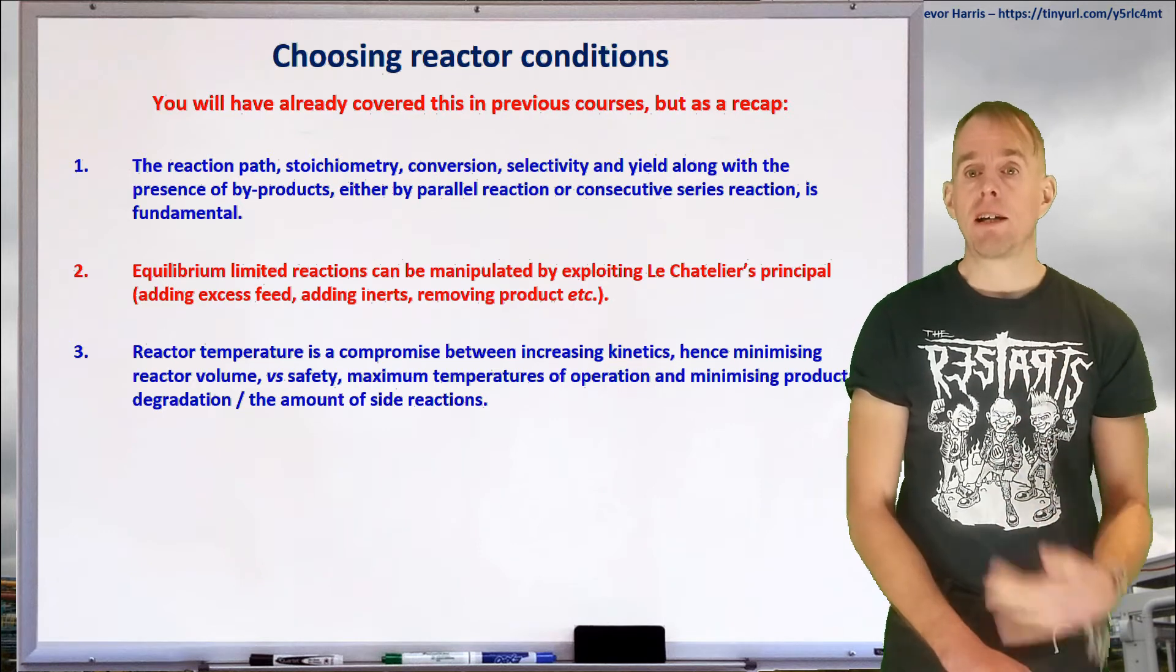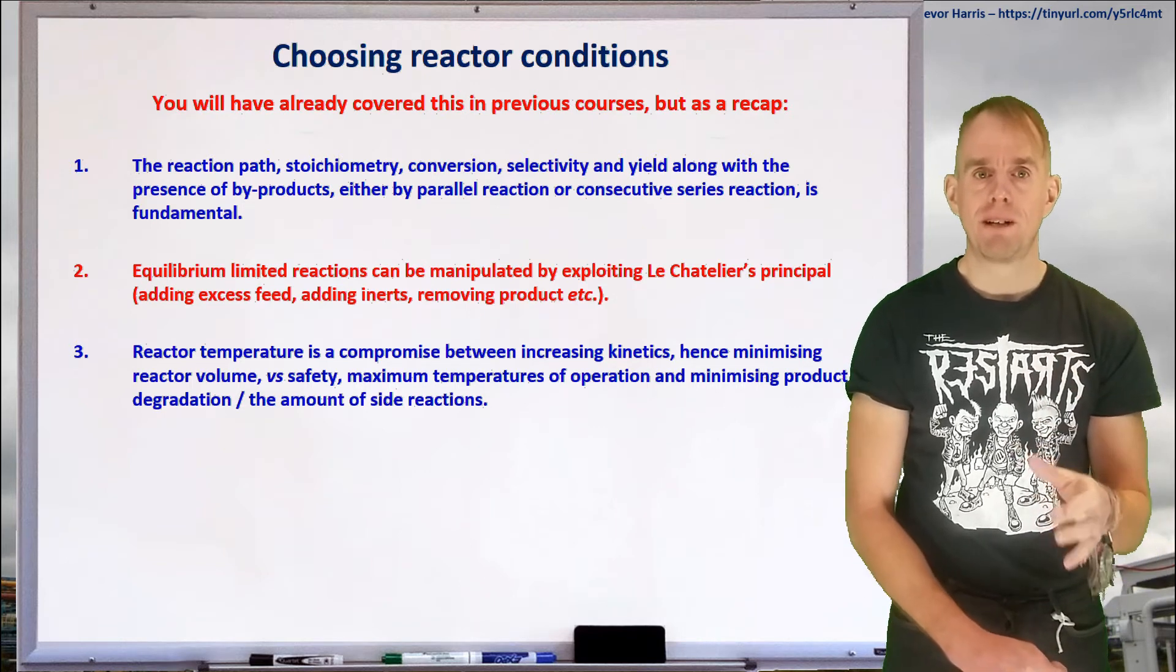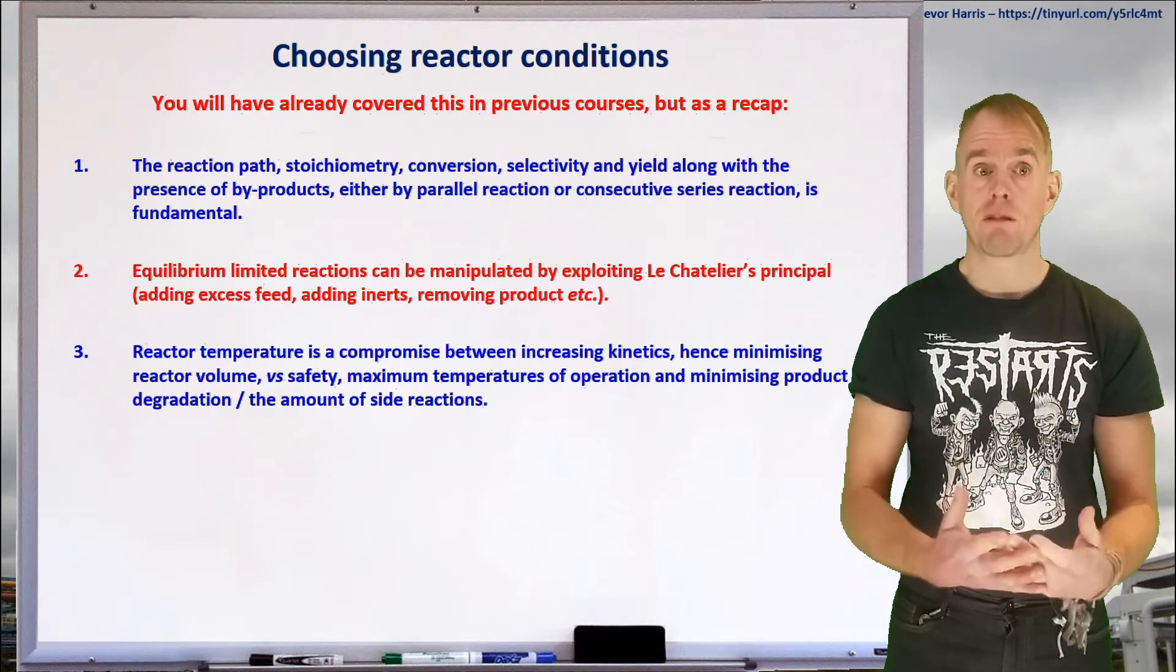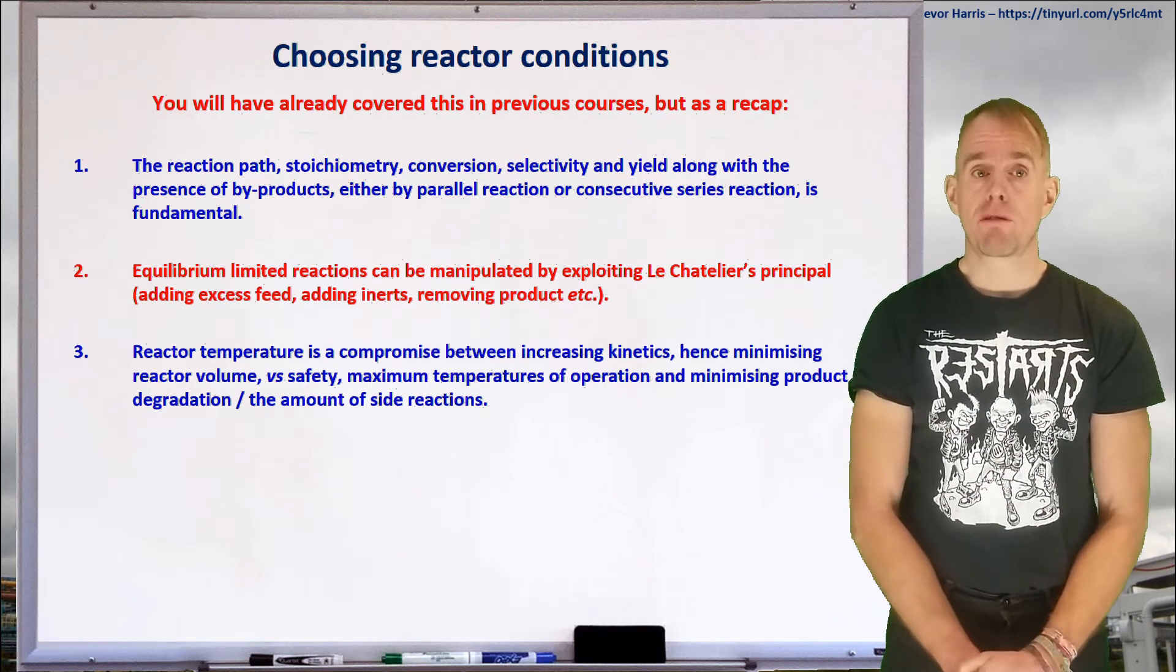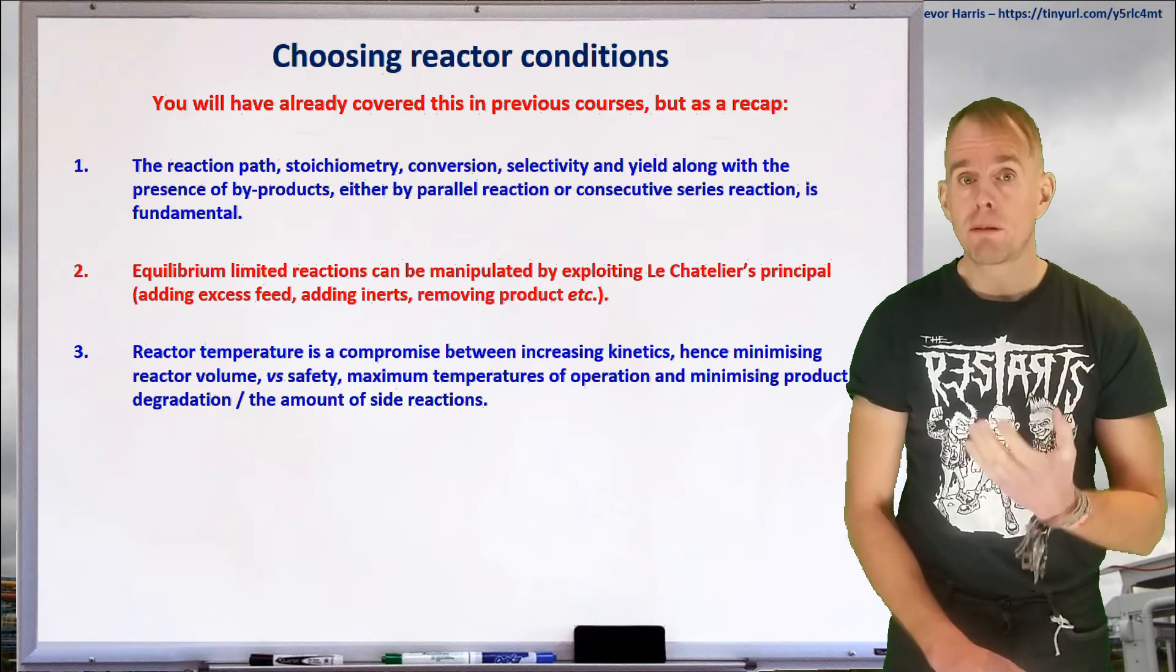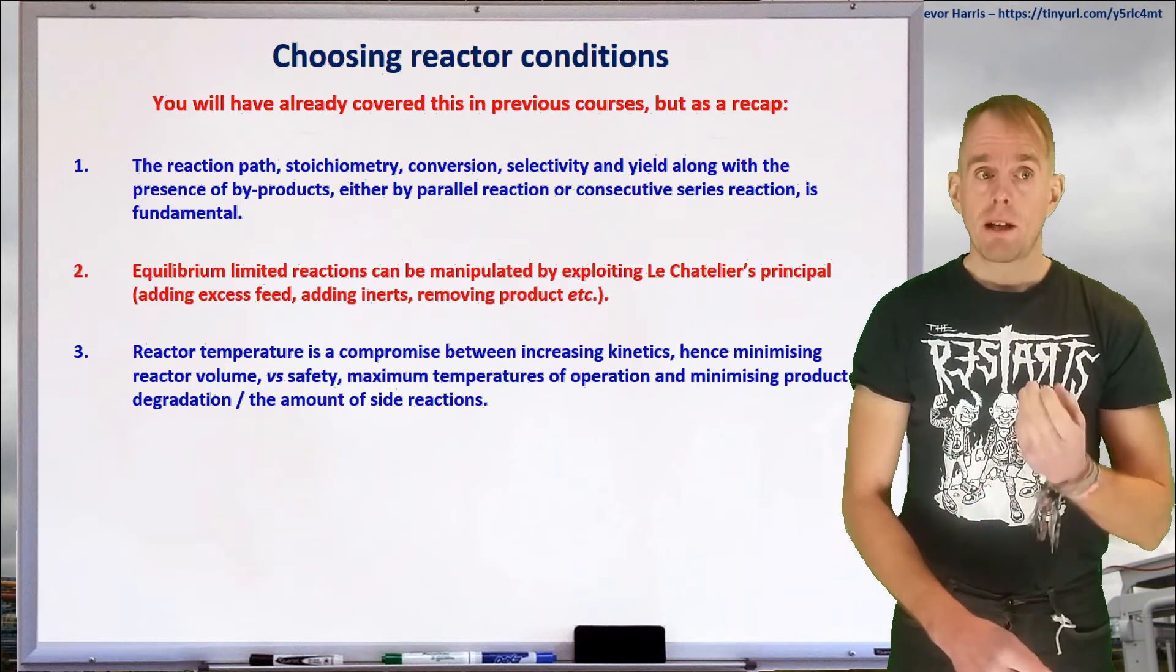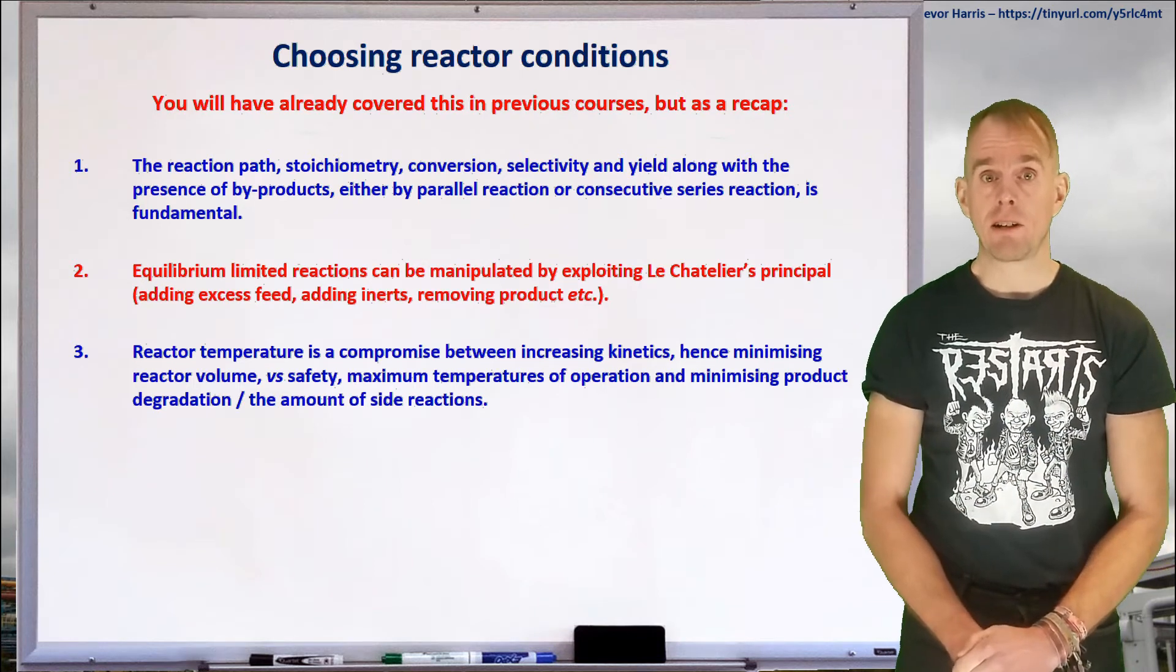Smaller reactor volumes are inherently safer than larger reactor volumes, but depending on the nature of your chemical system, lower temperatures may be inherently safer than higher temperatures. And so, you've got a quantitative safety case to work up to figure out what is the best way to do this. You've also got to remember that higher temperatures can lead to product degradation, and they can also promote side reactions and unwanted by-products over the key product that you're aiming to synthesize. So, the reaction temperature is going to be a compromise, but make sure that compromise has been set in an intelligent way.